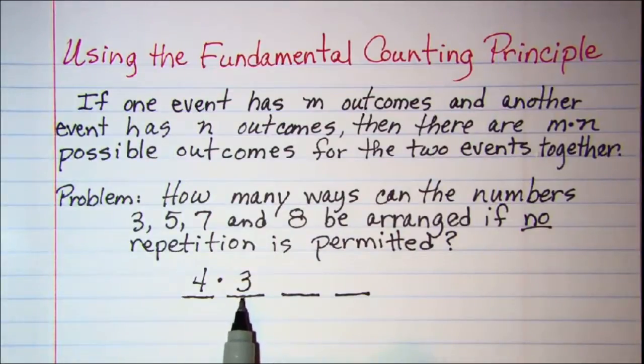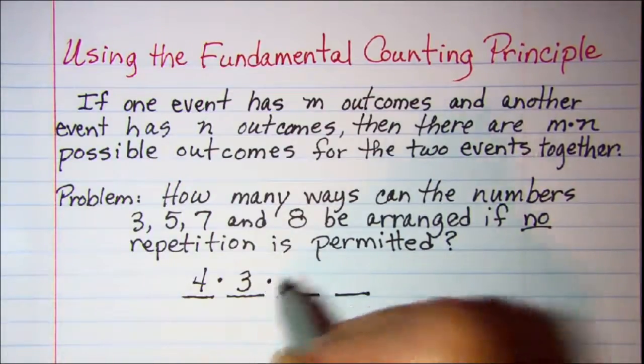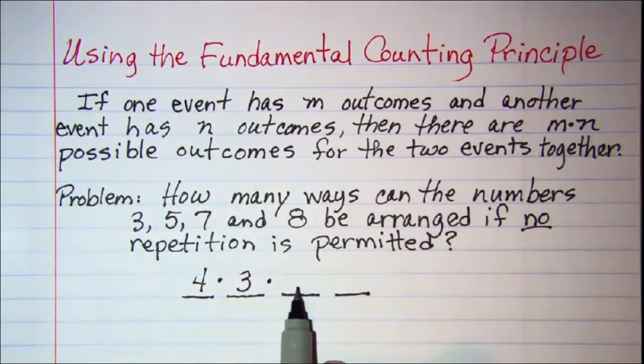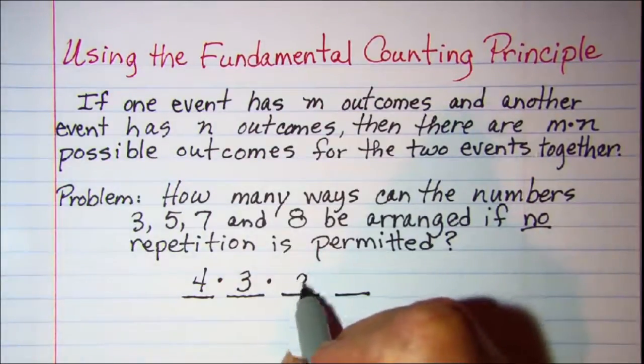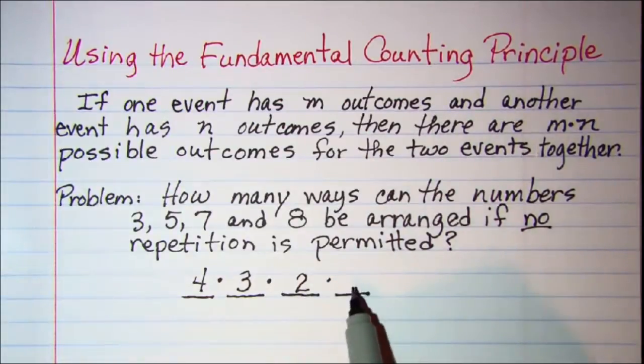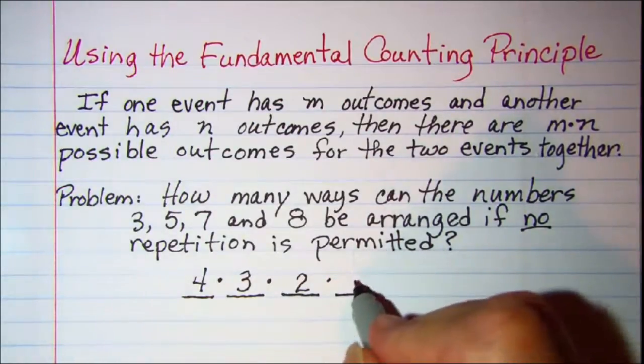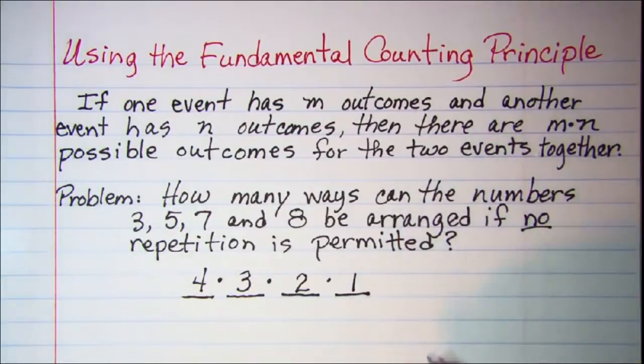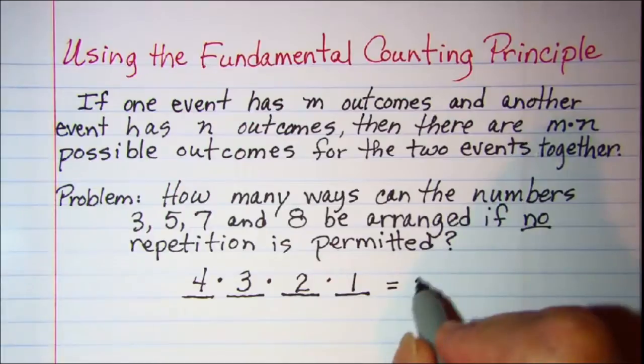And then for this spot there's only one number left. So when I multiply these I get 24 ways.